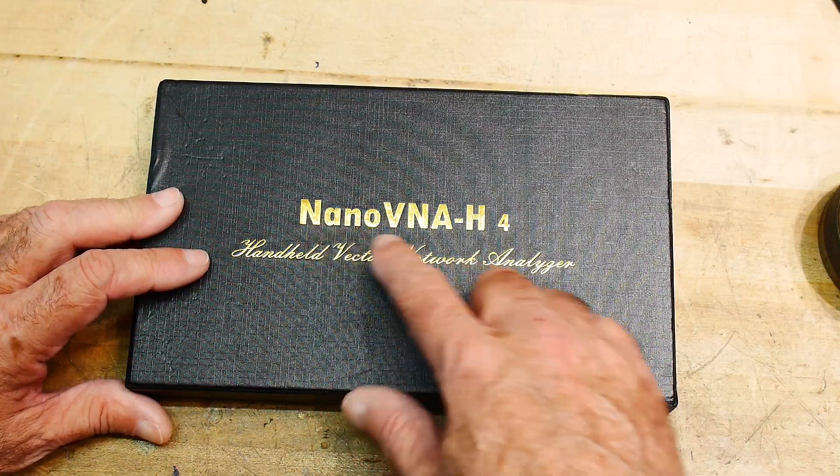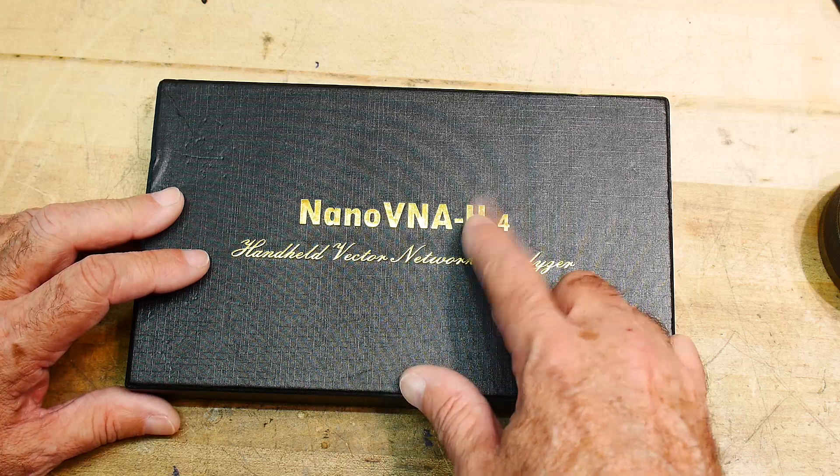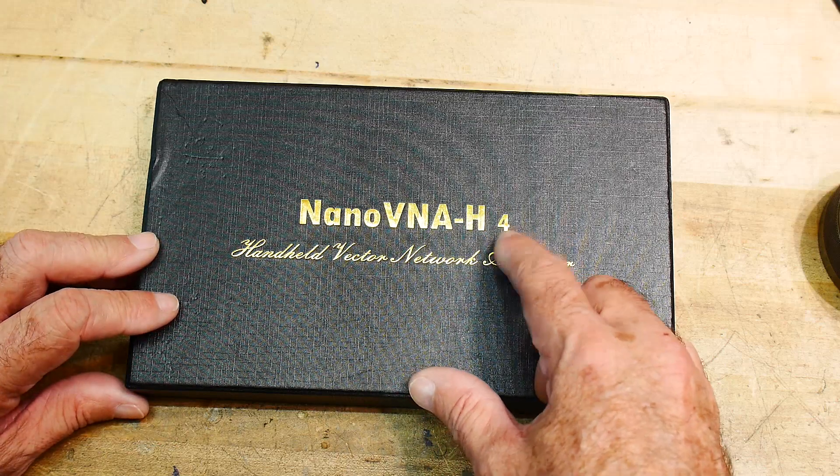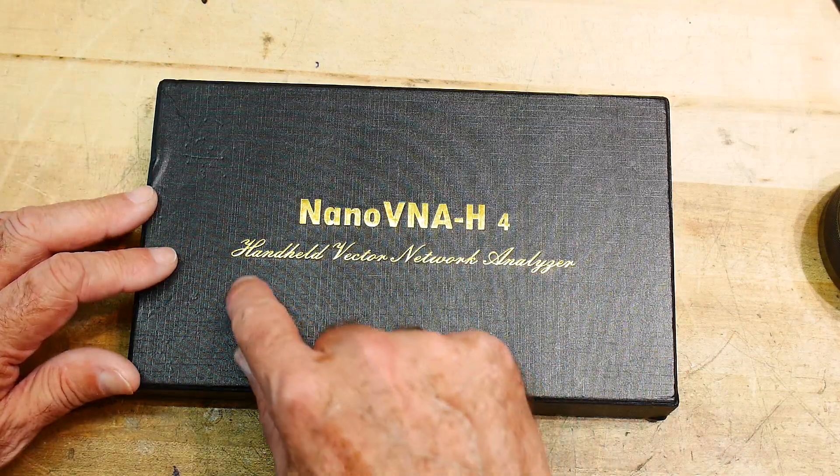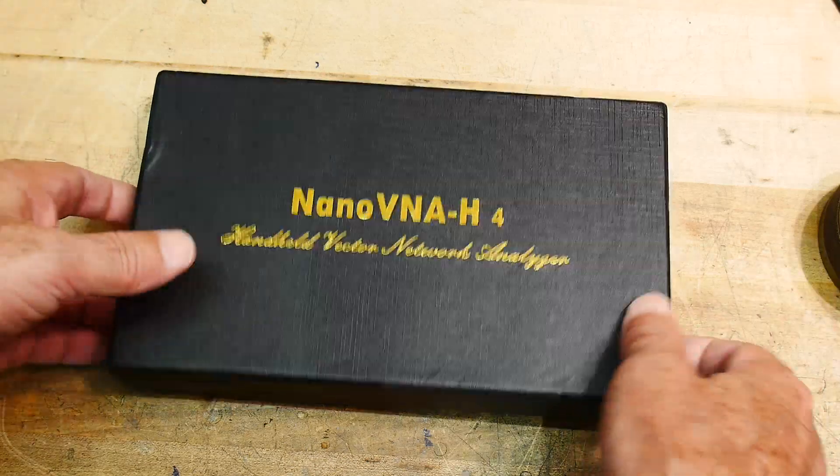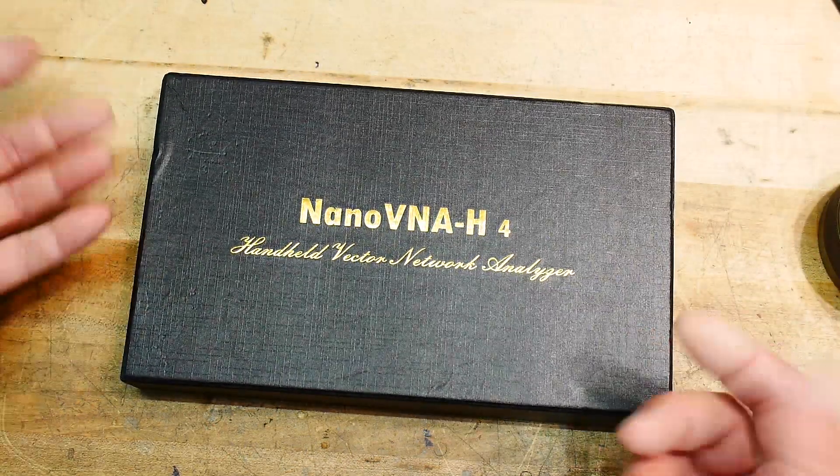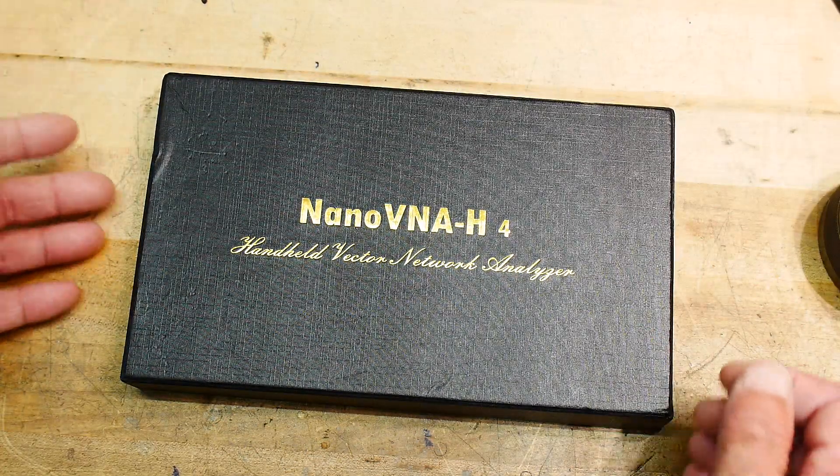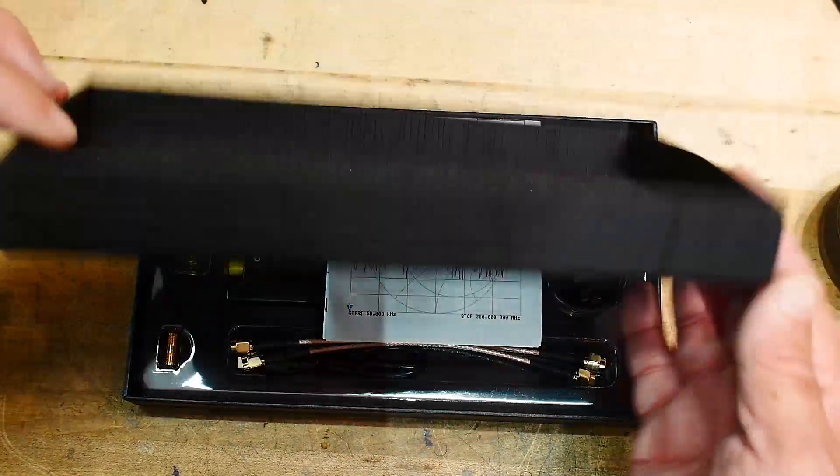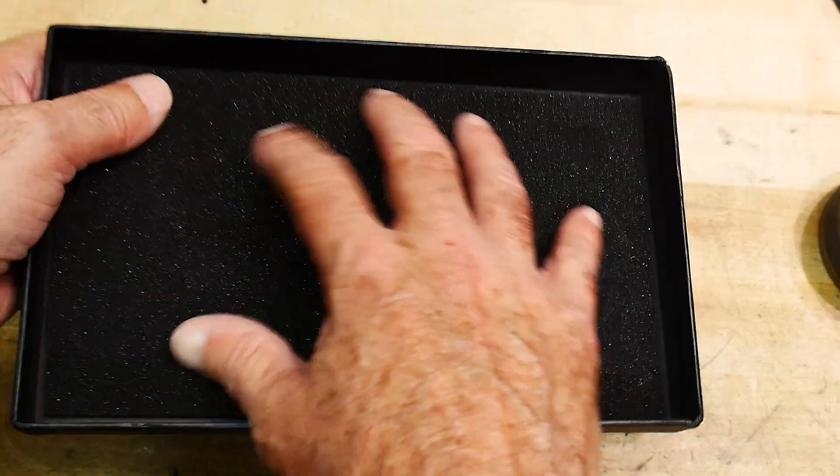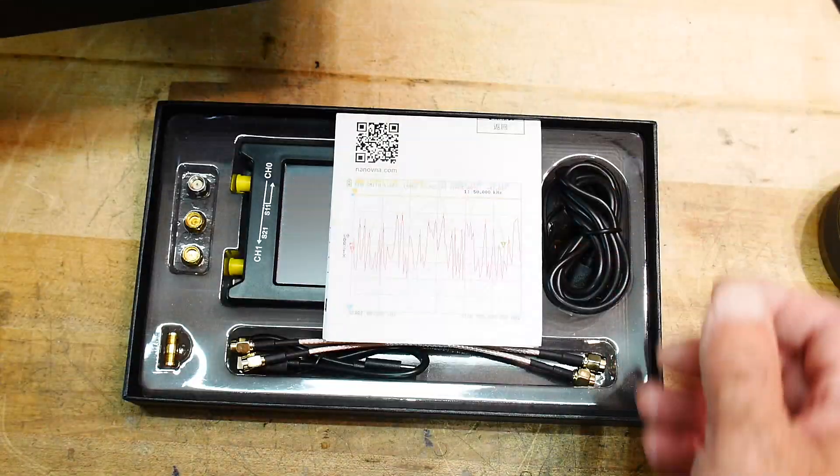So this is the Nano VNA-H, and it has a 4 here also, which means the screen size is 4-inch, so it's longer. Handheld vector network analyzer. Now the cool part is it comes in this nice box. I remember the first one just came in a bag or something. And so they've upped their game, and it comes in this nice box with a foam insert in it, so very nice.